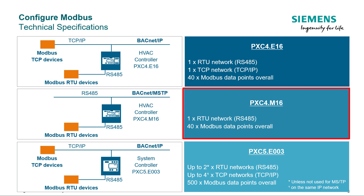PXC4-M16: The MSTP version supports only RTU Modbus devices. It also has the RS-485 connector onboard. The total number of Modbus data points supported is 40.